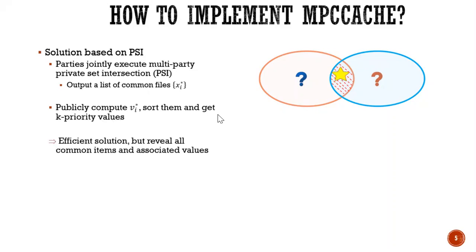So the next step is that the parties have to together compute VI star, sort them, and then get K priority values. So clearly this solution is efficient, but it reveals a common file and a sorted value.